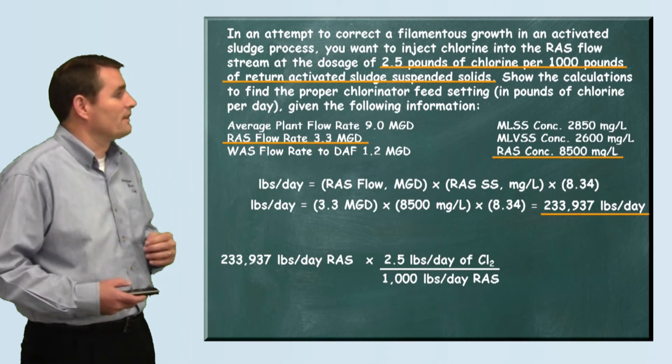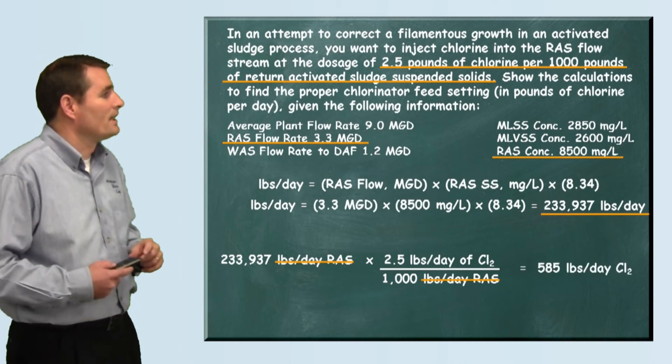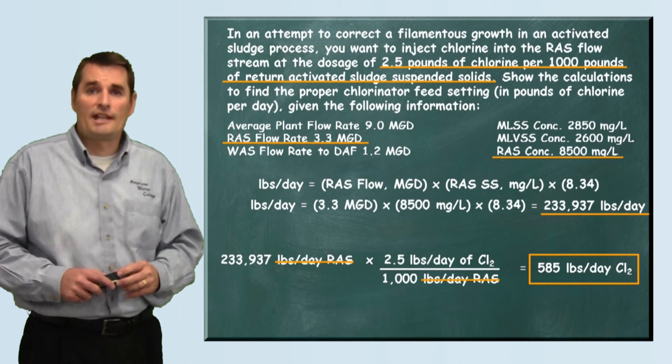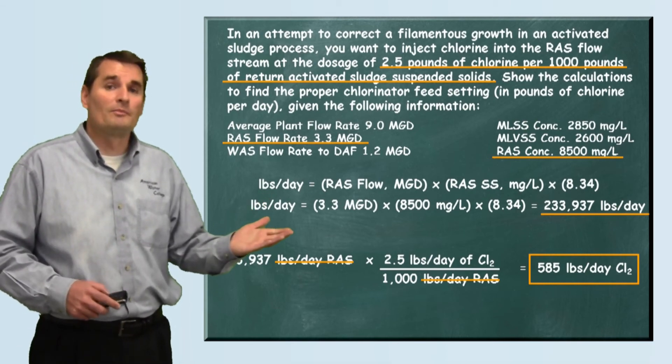So basically we just multiply across and divide by what's on the bottom and we come up with 585 pounds per day of chlorine. And that my friend is how this problem is solved.